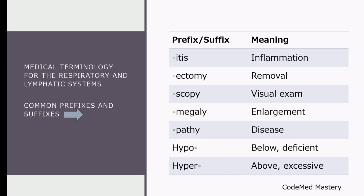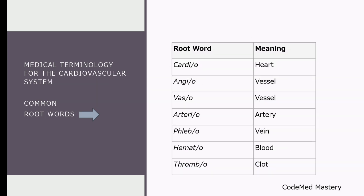Let us move on to the medical terminologies for the cardiovascular system. The common root words: cardio means heart, angio is vessel, and vaso means vessel. Please take note of all this. Arterio refers to artery, phlebo refers to vein, and hemato is blood. Thrombo is clot.